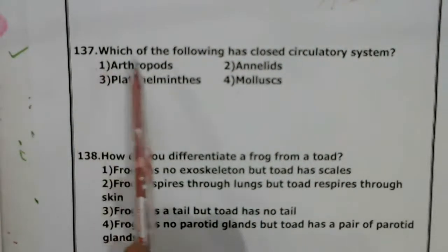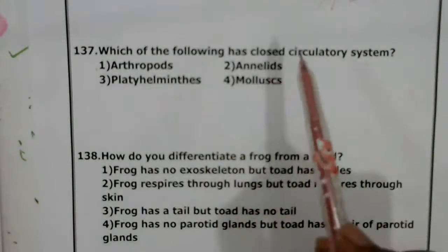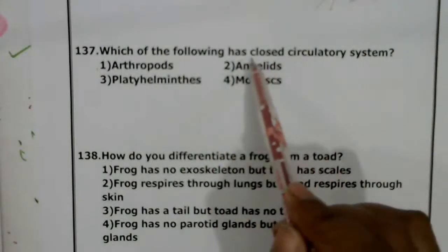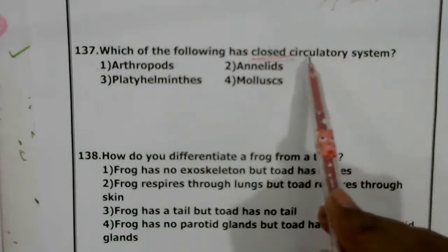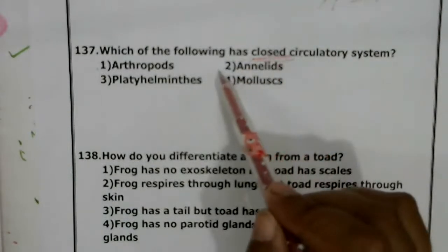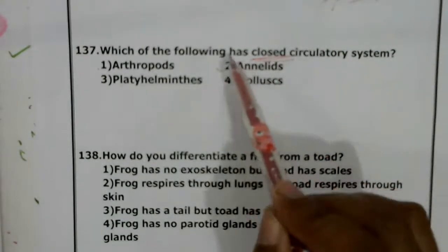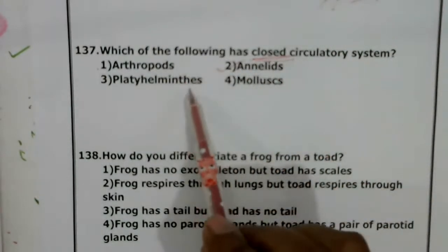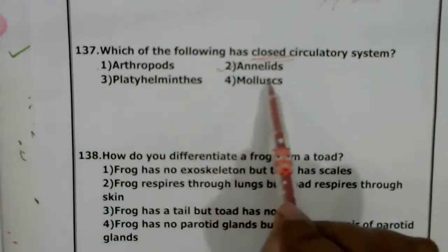Question 137: Which of the following has a closed circulatory system? A closed circulatory system is present in annelids, whereas the remaining phyla given have an open circulatory system.